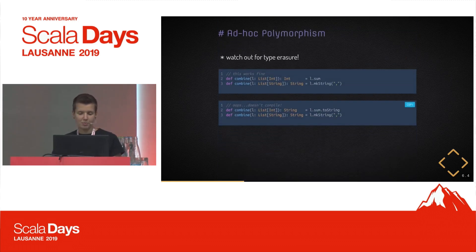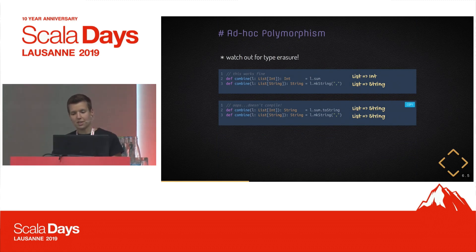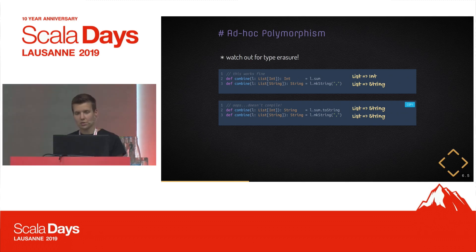One problem that can come up is caused by type erasure. As you may know, on the JVM the runtime type of parameterized types is erased. So why does the first example work but the one at the bottom does not? The reason is that at runtime the first method goes from list to int and the second from list to string — those are still distinguishable. But in the second case we have two `combine` methods both going from list to string, so the compiler complains that two methods have the same name and same types.